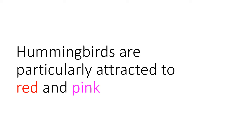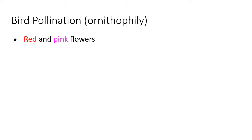Birds tend to be more similar to humans in characteristics they might look for in a flower. In our area, hummingbirds tend to be the most important bird pollinator. In more tropical environments or islands, we might see a wider variety of bird pollinators. Hummingbirds are particularly attracted to red and pink, and birds in general will be more attracted to red. So we're looking for red and pink flowers. Birds can still pollinate white or other colored flowers, but red and pink tend to be more specialized toward birds.